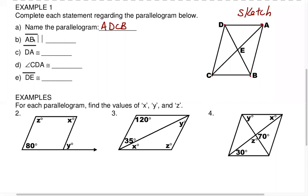Moving on to part B: segment AB. Let's identify that — AB is the right side. The parallel symbol looks like parallel train tracks — two lines meaning parallel. So AB is parallel to what? The right is parallel to the left. So AB would be parallel to segment CD.